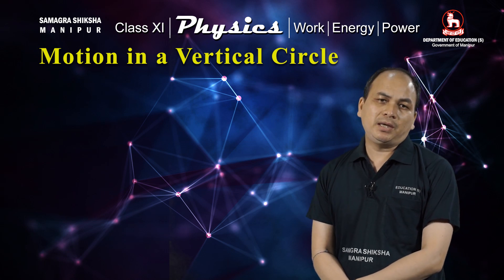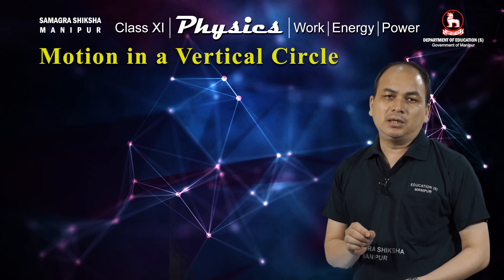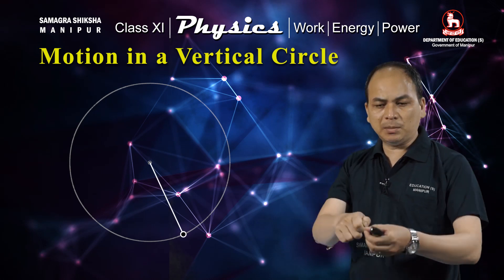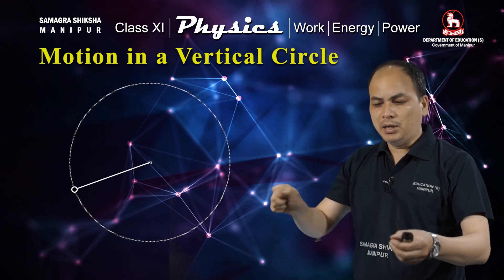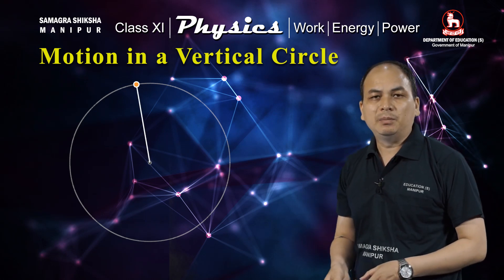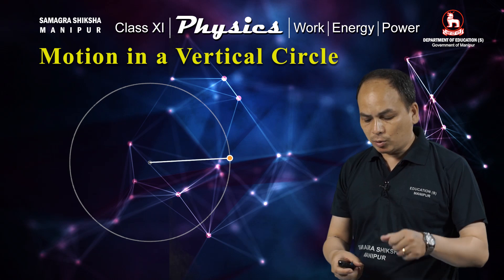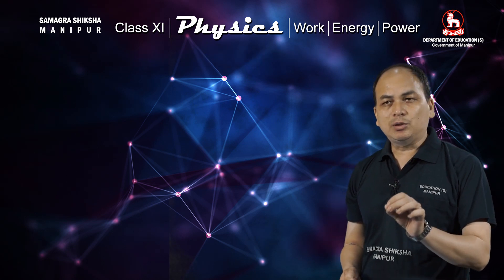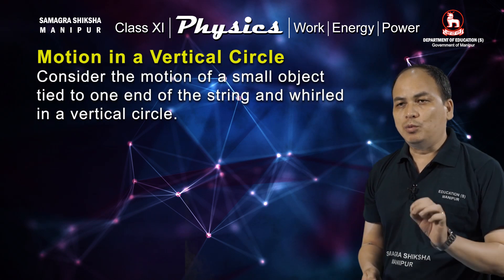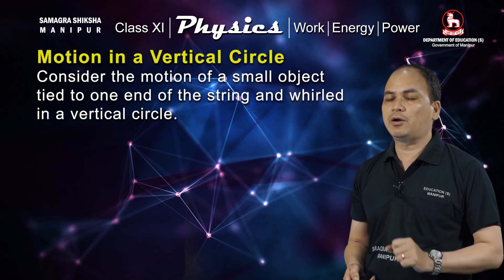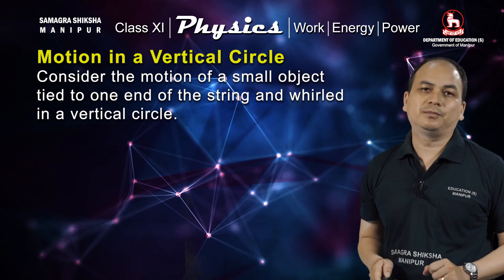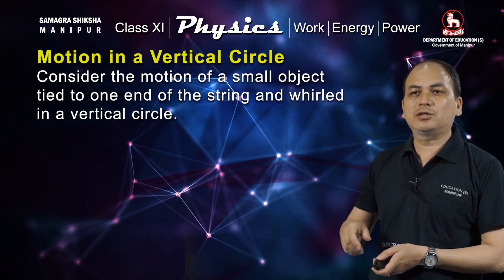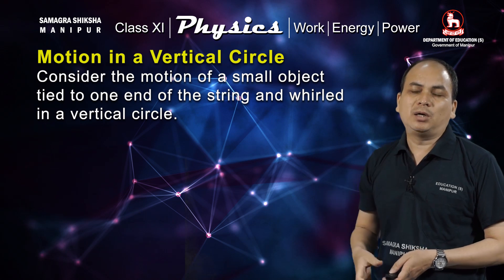If the motion is in a vertical circle, it is a circular motion — the object moves around like this. Consider the motion of a small object tied to one end of a string and whirled in a vertical circle.